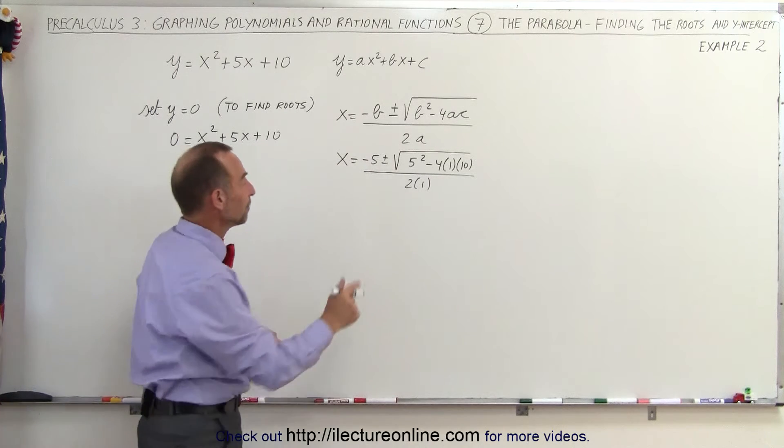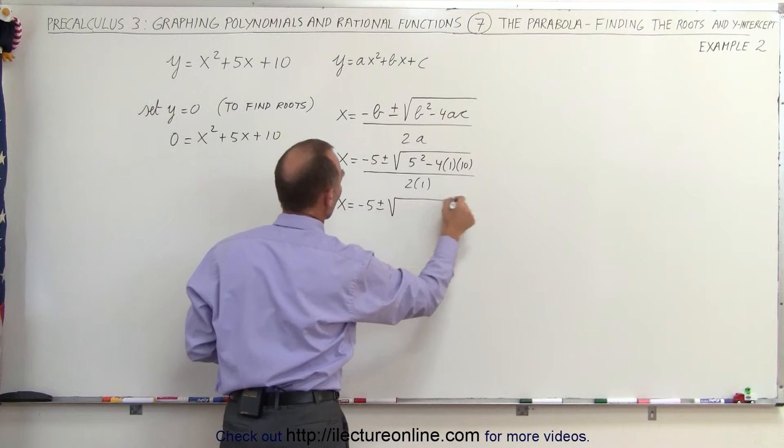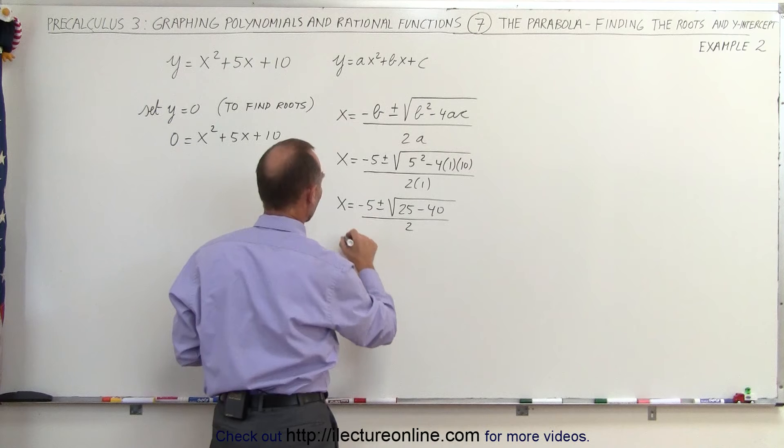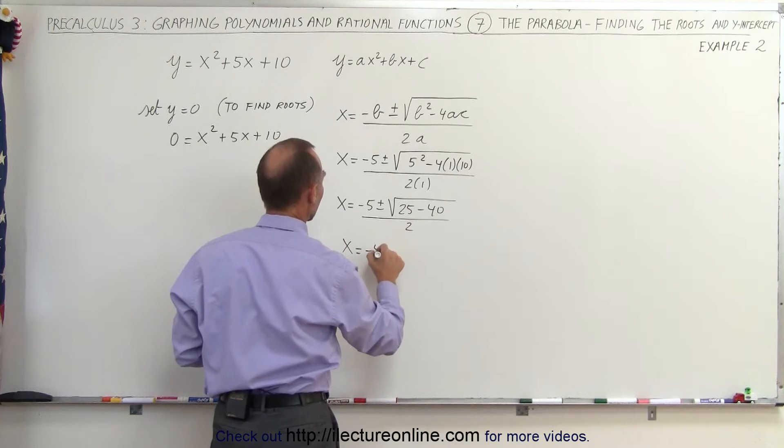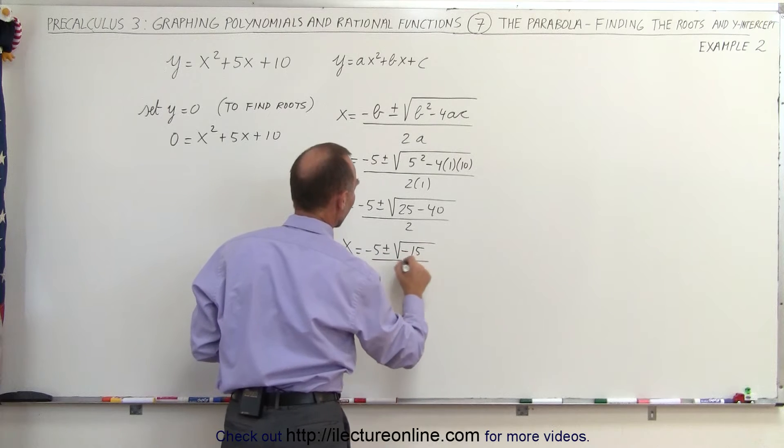Simplifying that, we get x is equal to minus 5 plus or minus the square root of 25 minus 40, all divided by 2. And simplifying it further, we get x equals minus 5 plus or minus the square root of negative 15, all divided by 2.